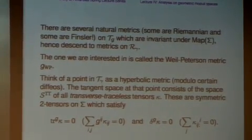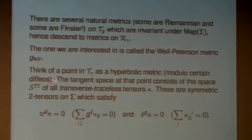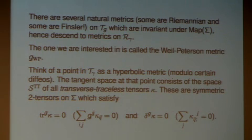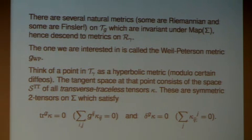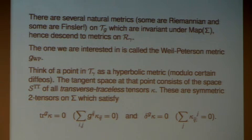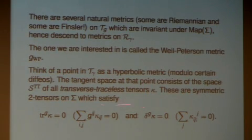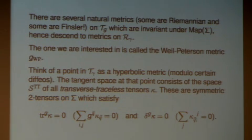The Weil-Petersson metric is the one I want to describe. Any point in moduli space, or Teichmüller space — one is just the cover of the other — is a hyperbolic metric modulo diffeomorphism, so you have the surface and a particular metric on it. To understand what a metric is, you need to say what the metric does to tangent vectors. Tangent vectors to the moduli space are infinitesimal deformations of the metric. If I take a metric and deform it, I get a symmetric two-tensor. The tangent space to the space of hyperbolic metrics can be identified with the so-called transverse traceless tensors.